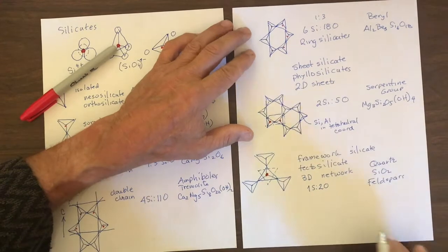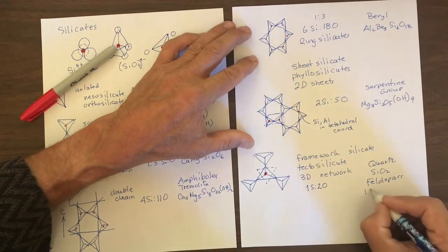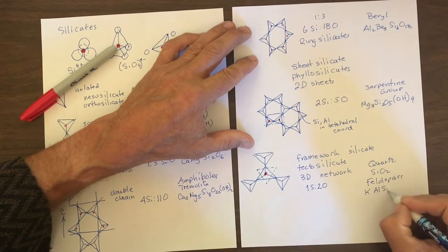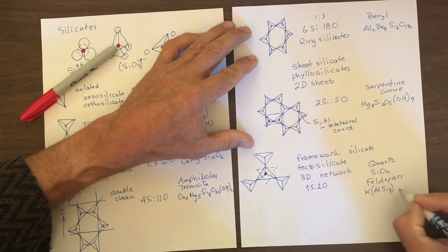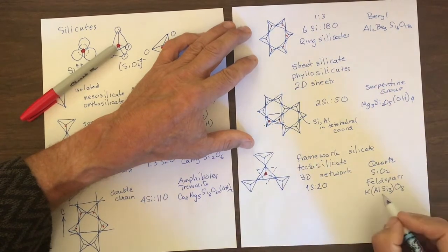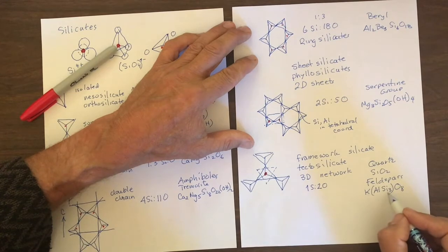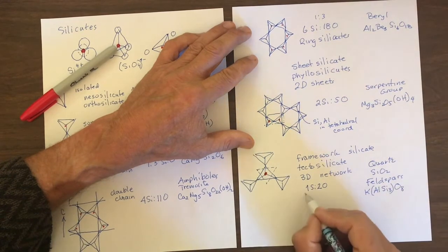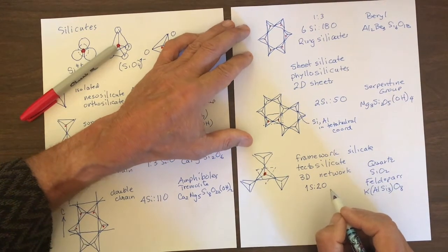So we'll look at, for example, an end member K feldspar would be K-Al-Si3-O8. And you can see again, aluminum plus silica is four, oxygen eight, and we have the one to two stoichiometry.